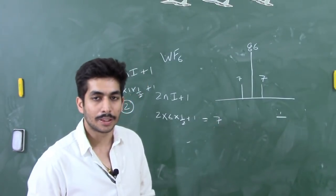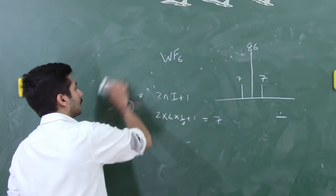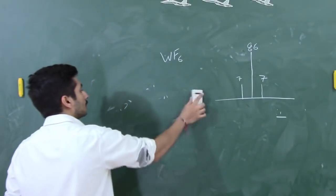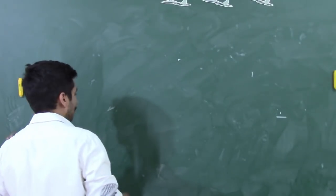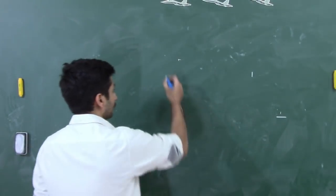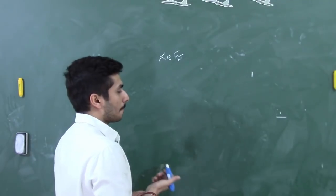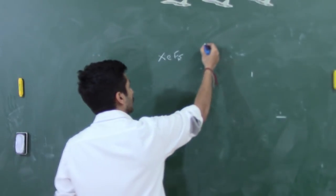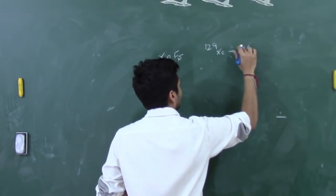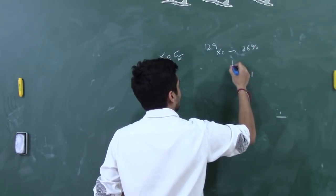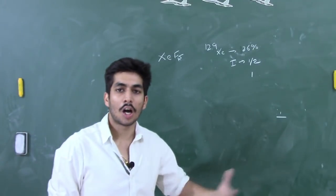Now for a question asked in December 2016 worth two marks: XeF5⁻ is given. We are told that 129Xe has an abundance of 26% and a spin value of I = 1/2. The question asks: in the 19F NMR, how many peaks would you see?